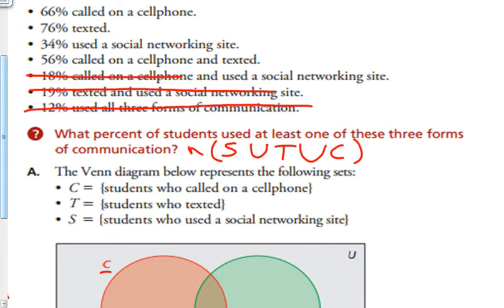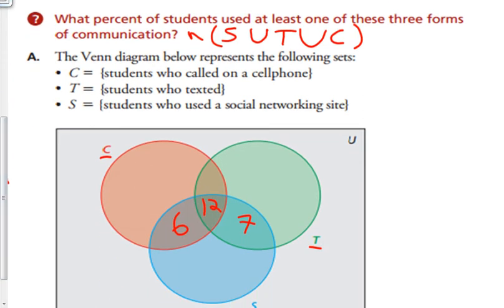56% called on a cell phone and texted. So 12 minus 56 gives me 44.